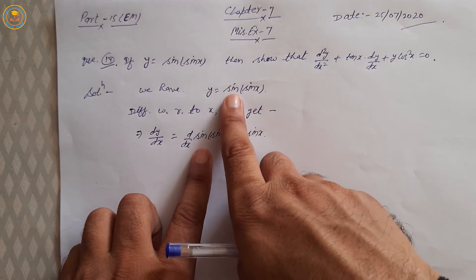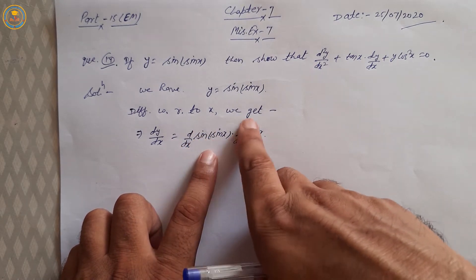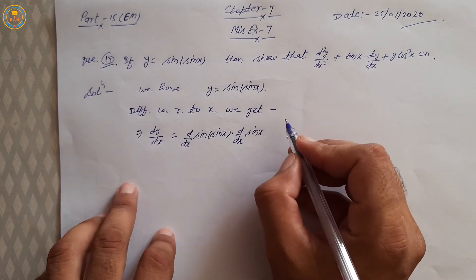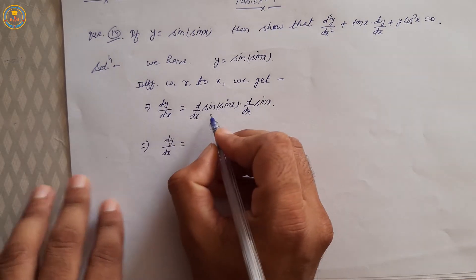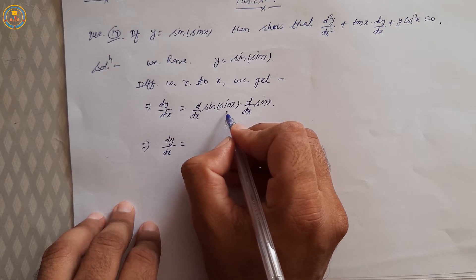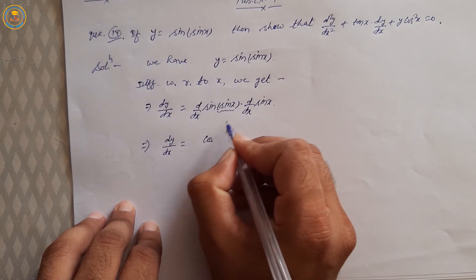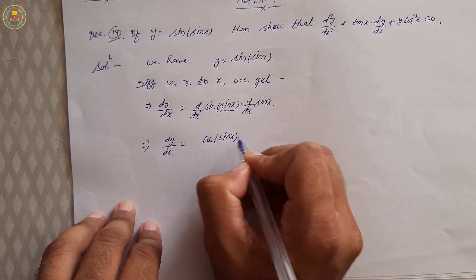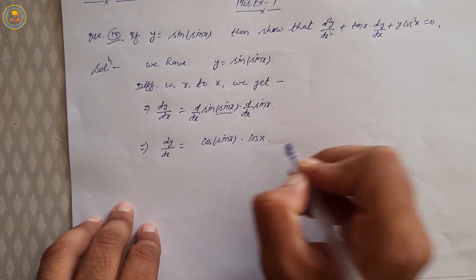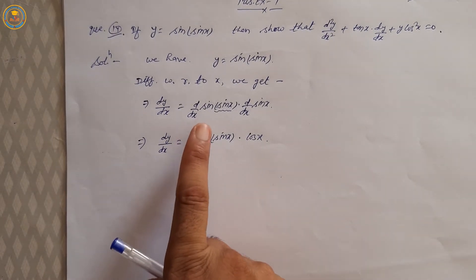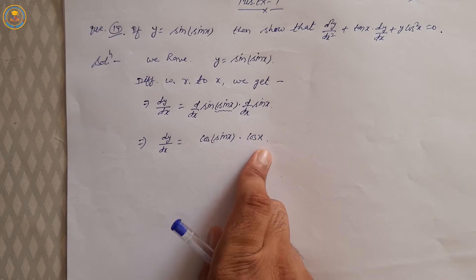First differentiate sin(sin x) into second differentiate of sin x: d/dx of sin(sin x) = cos(sin x). And d/dx of sin x = cos x. So dy/dx = cos(sin x) · cos x.